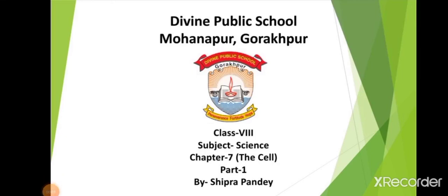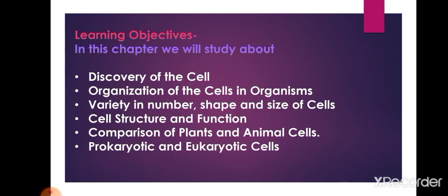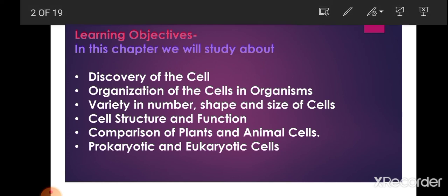Hello students, good morning. Today we are going to discuss Chapter 7 of Class 8 Science, that is 'The Cell'. In this chapter we will discuss the discovery of cell, organization of cells in organisms, variety in number, shape and size of cells, cell structure and function, comparison of plant and animal cells, and prokaryotic and eukaryotic cells. These first three topics we will discuss in this part, and the remaining topics in the next part.